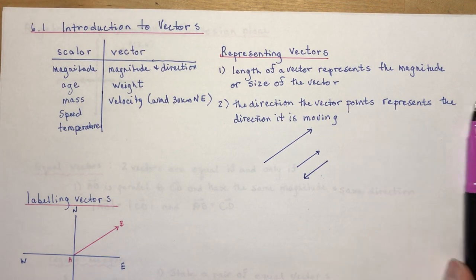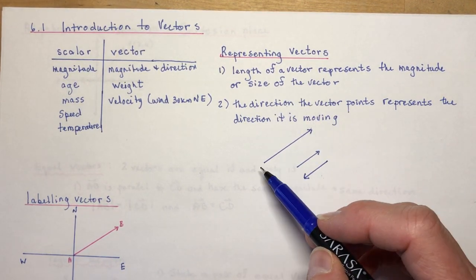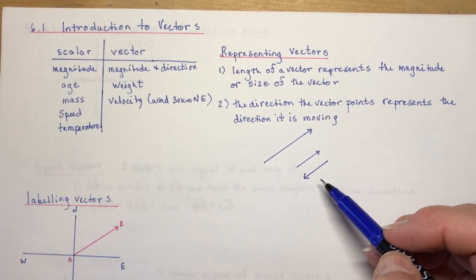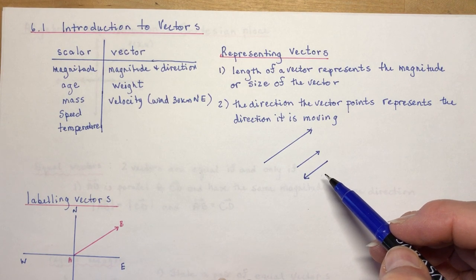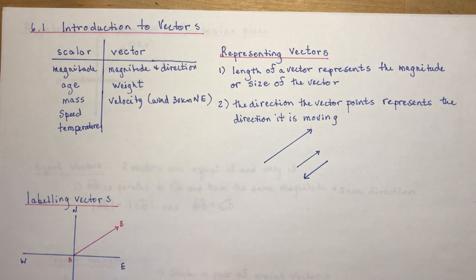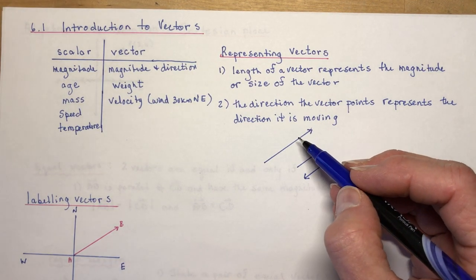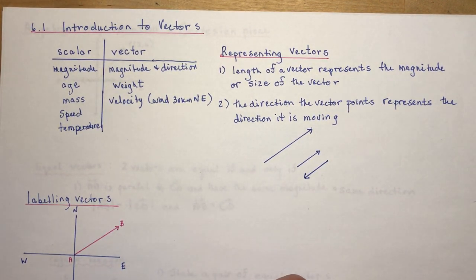When we represent vectors when they're just drawn on a piece of paper, there's two different types. There's the type that you just do geometric vectors, and the other one is Cartesian plane vectors. So geometric vectors and algebraic.